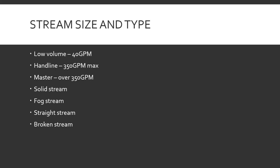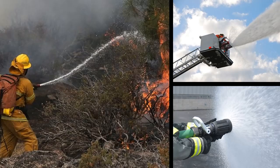Stream sizes — or shapes: solid, fog, straight, and broken. That may mean a lot if you've already been a firefighter for a while, or you're just getting into it and still a little confused. The low-volume type is that 40 gallons per minute or less — one person can easily handle it, hitting some brush or wildland, small nozzle, small hose.